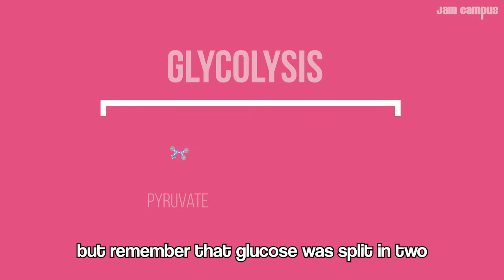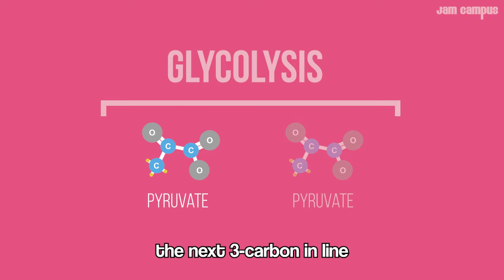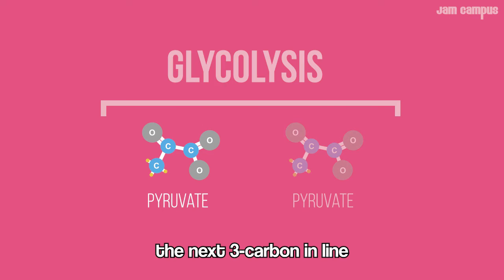But remember, that glucose was split into two — the next 3-carbon in line. The other pyruvate still has to go on through. In mitochondria, cycle of reactions.